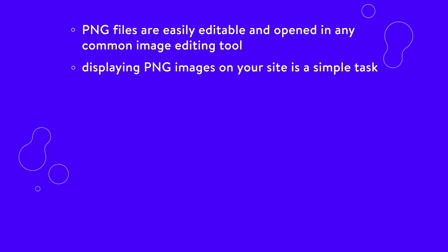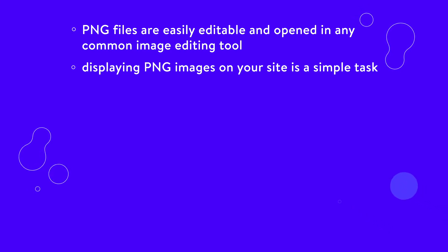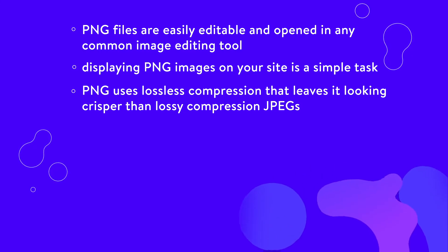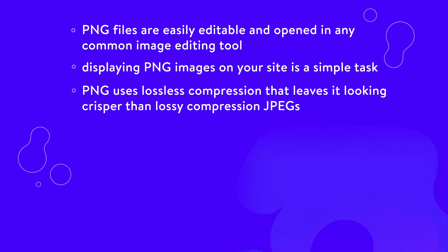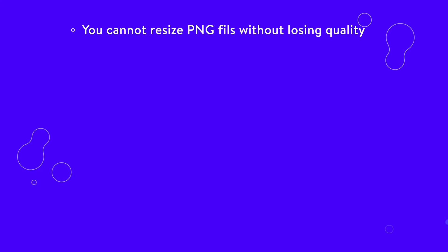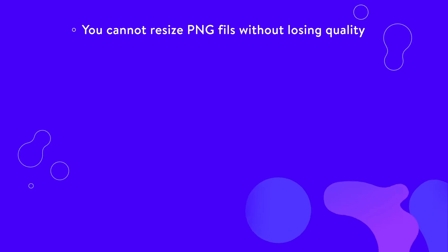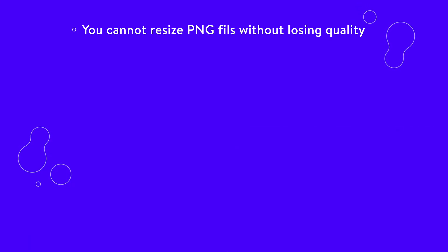Whether you're coding from scratch or using the WordPress media manager, displaying PNG images on your site is a simple task. PNG uses lossless compression that leaves it looking crisper than lossy compression JPEGs. However, this does come at a larger file size cost and it can't compare to vector images. The PNG format was created decades ago and has several notable flaws that haven't been updated for the modern era — you cannot resize PNG files without losing quality. You need to plan carefully when designing raster graphics and make sure it's the right size.